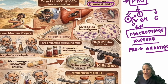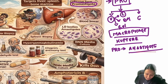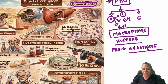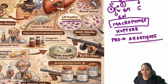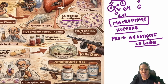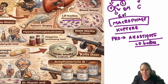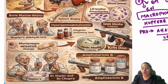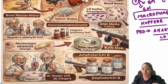Once inside the cell, the promastigote becomes amastigote. This amastigote form is called the LD body, or Leishmania donovani body. The organism has entered the cell and is proliferating there. The villagers then take help from doctors — Dr. Napier and Dr. Chopra.